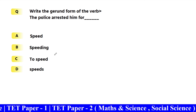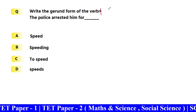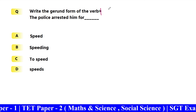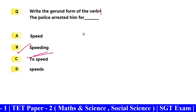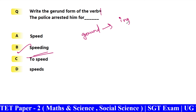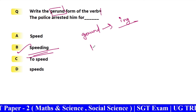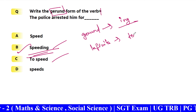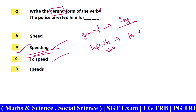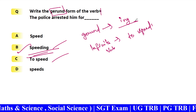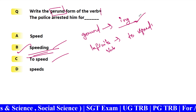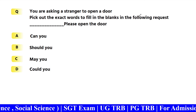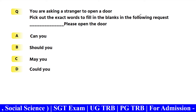Write the gerund form of the verb. Gerund form — 'Speed' becomes 'speeding'. The policeman arrested him for speeding — Option B is the answer. Gerund ends in '-ing'. In the options, infinitive is 'to speed', and gerund is 'speeding'. Gerund functions as an adjective or noun.